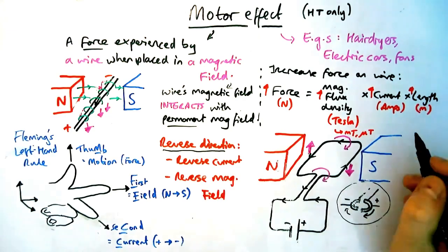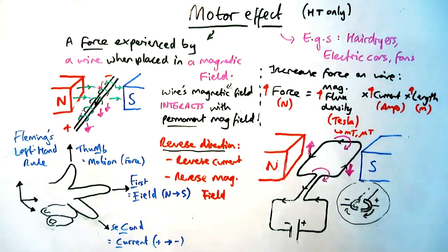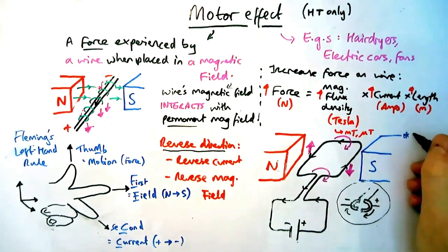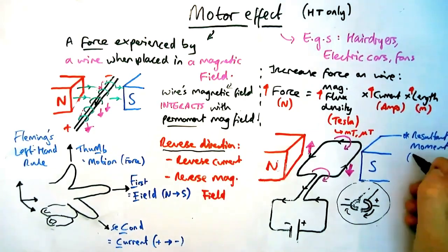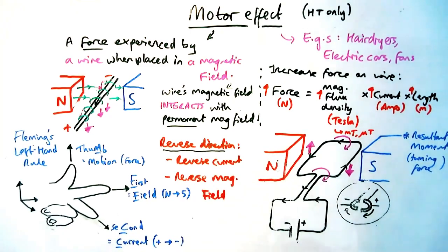How would you explain this in a question? It looks exactly the same as an explanation as the motor effect, so a force experienced by a wire in a magnetic field, but you'd say because it's turning there's something called a resultant moment or an overall moment which is a turning force meaning it turns.